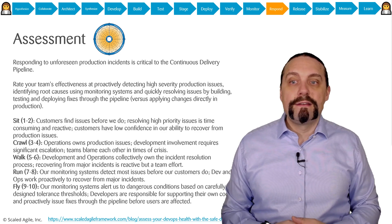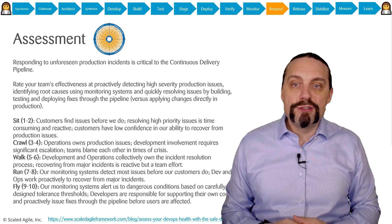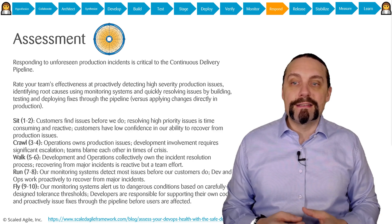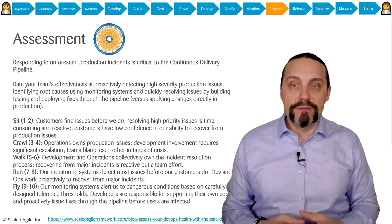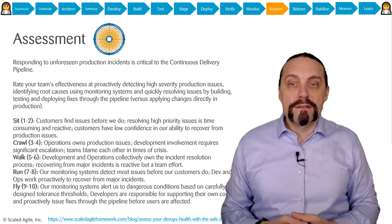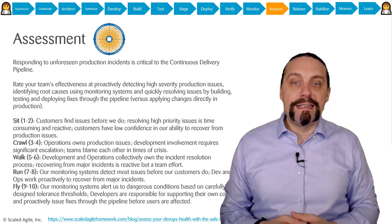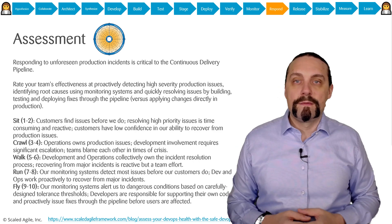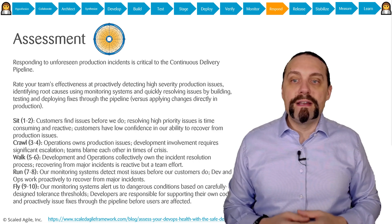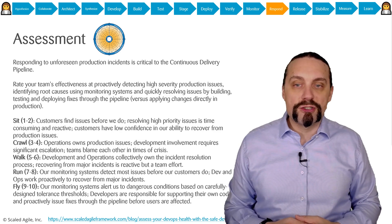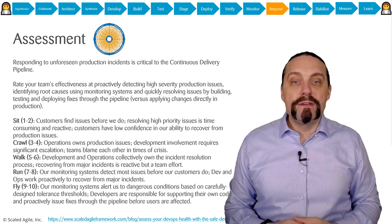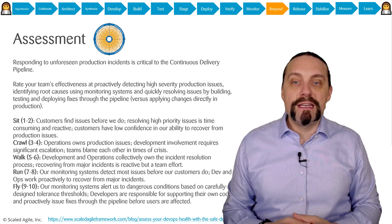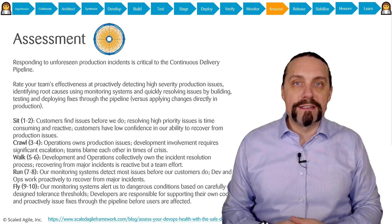You are a sit when customers find issues before you do, resolving high-priority issues is time-consuming and reactive, and customers have low confidence in your ability to recover from production issues. You are a crawl when operations owns production issues, development involvement requires significant escalation, and teams blame each other in times of crisis.